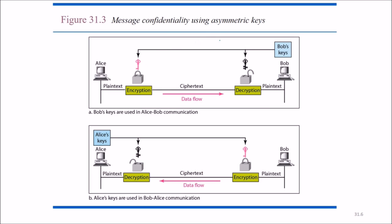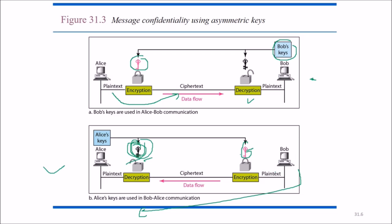For message confidentiality using asymmetric keys, Bob's public key is used to transform plaintext into ciphertext, but decryption is done only with the private key held by Bob. Alice's key is used for communication going in the other direction — the public key for encryption and the private key for decryption in the opposite direction.